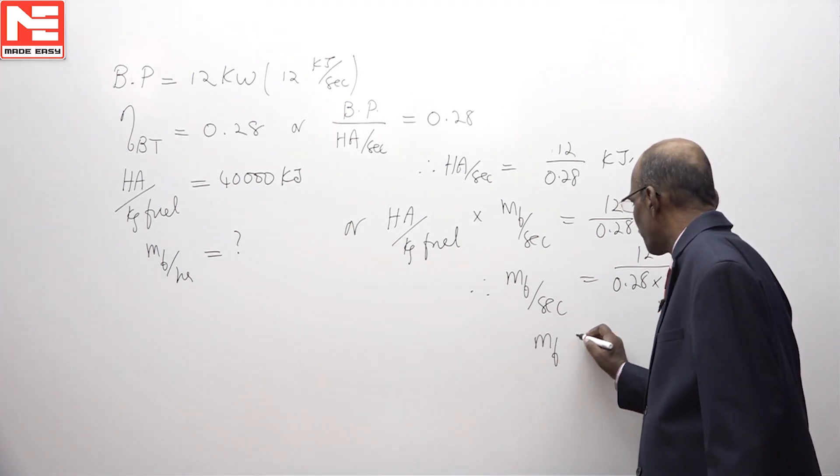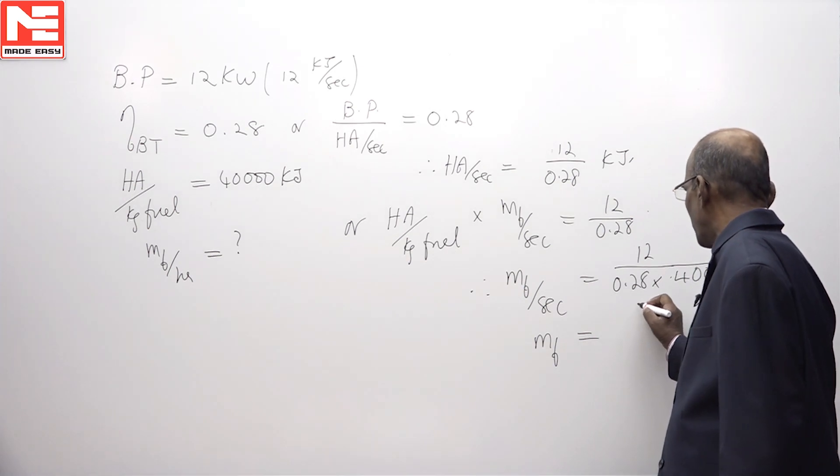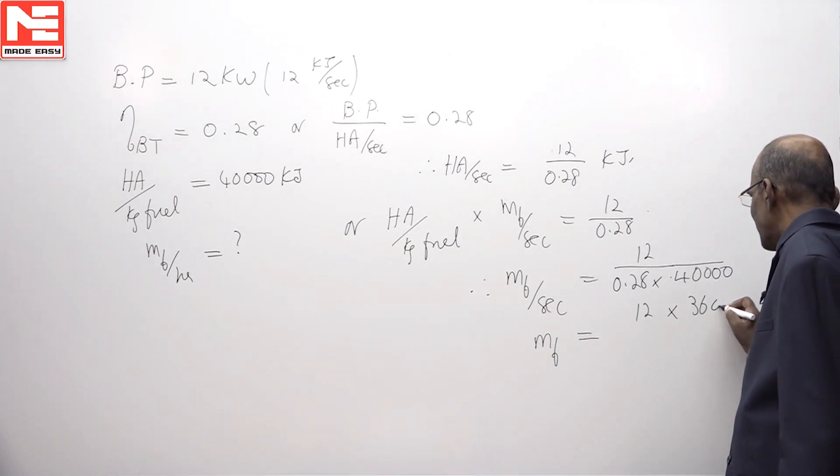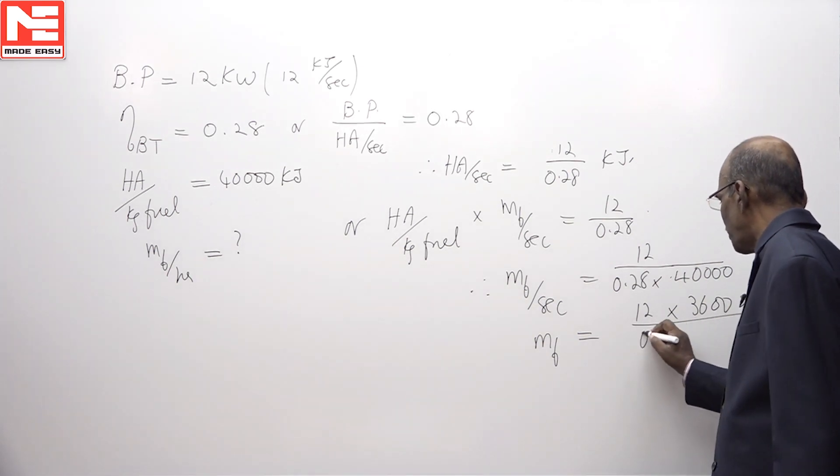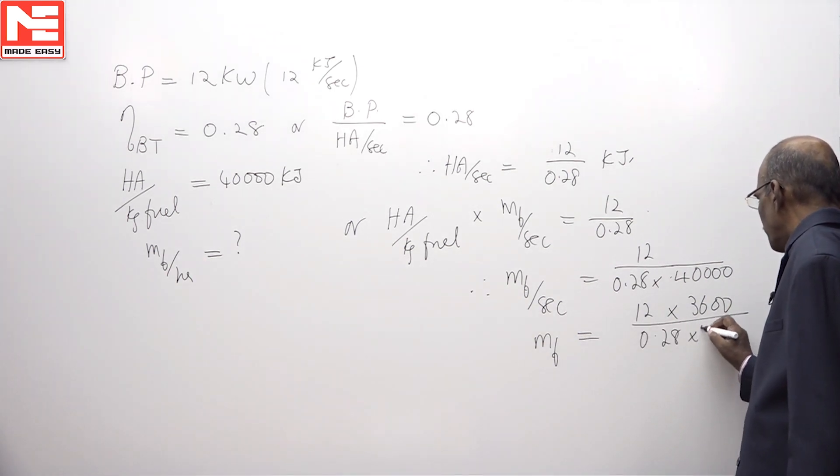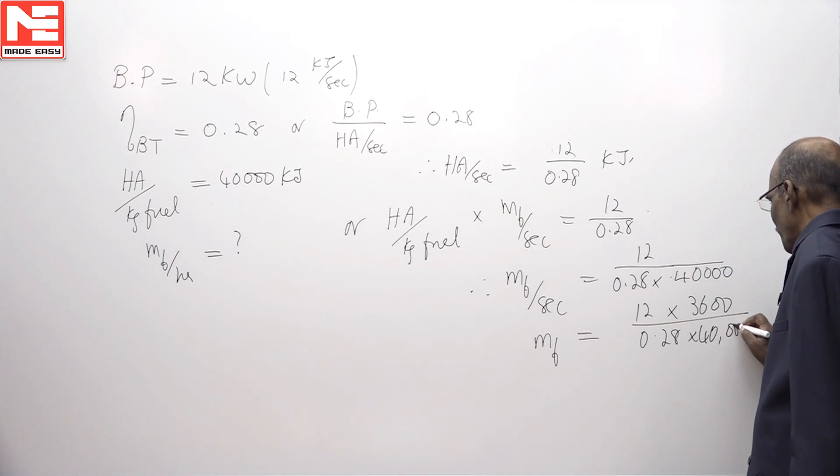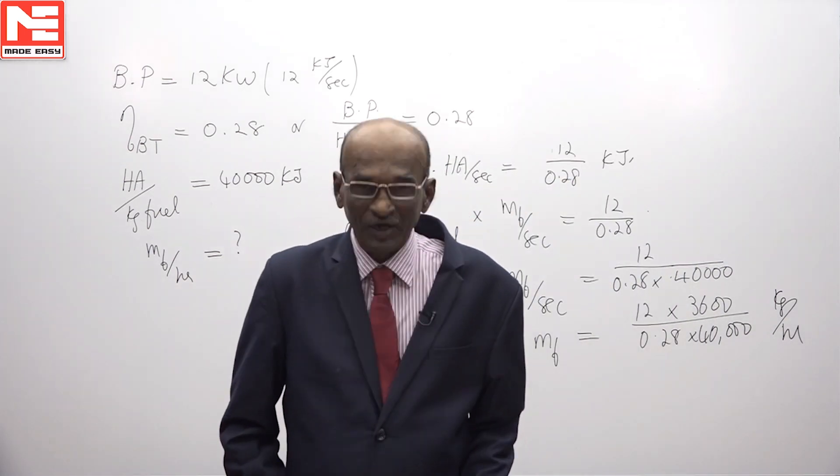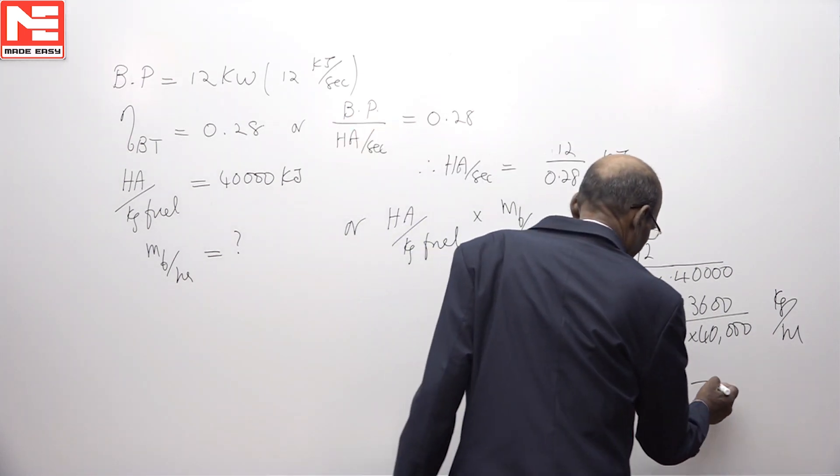From this, we will get the mass of fuel per hour to be mass of fuel per second multiplied by 3600 divided by 0.28 into 40,000, and on simplification, this mass will be in kg per hour which is equal to 3.85 kg per hour.